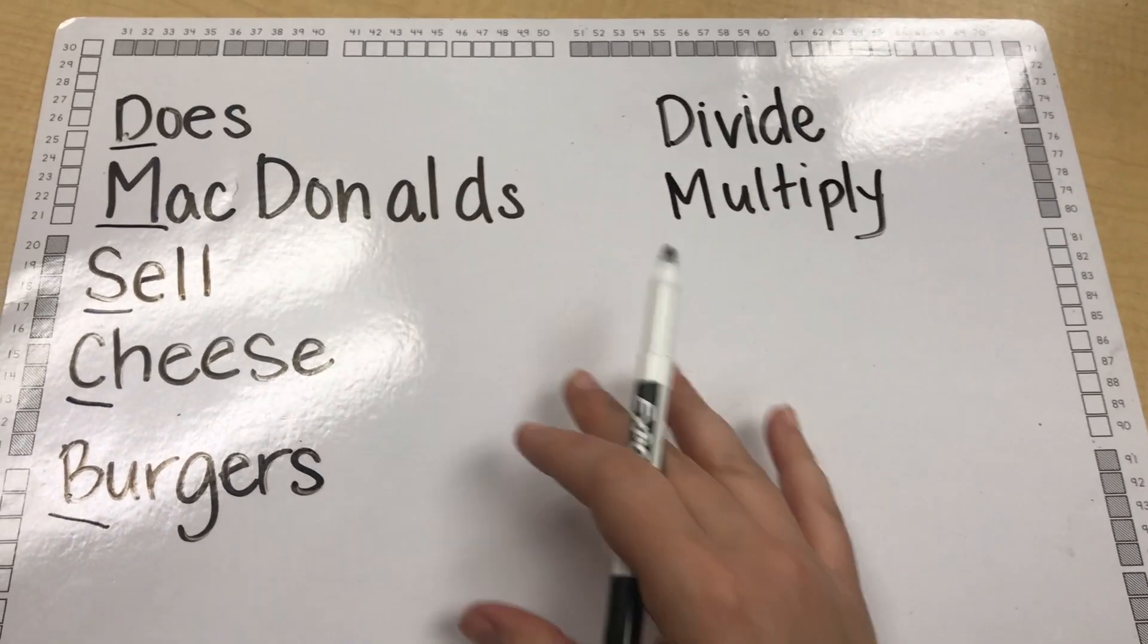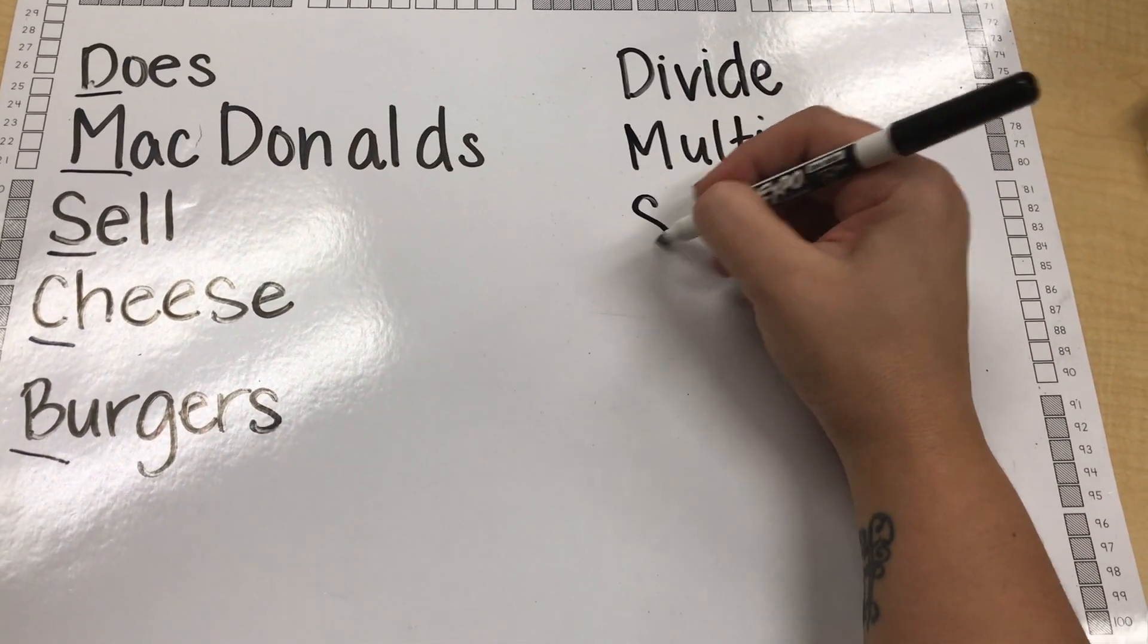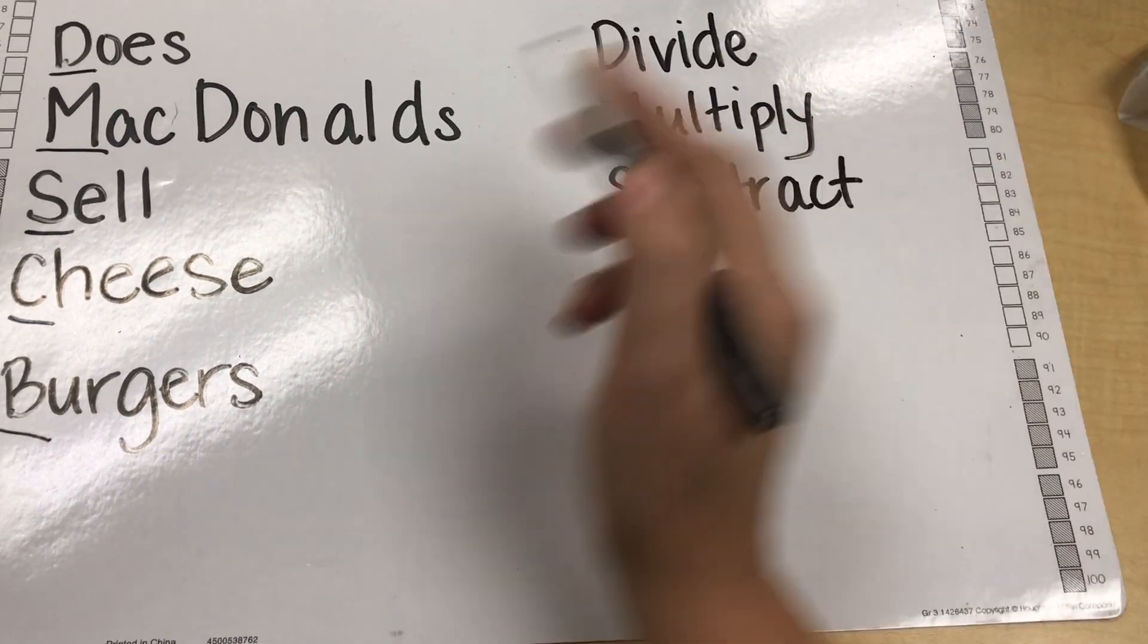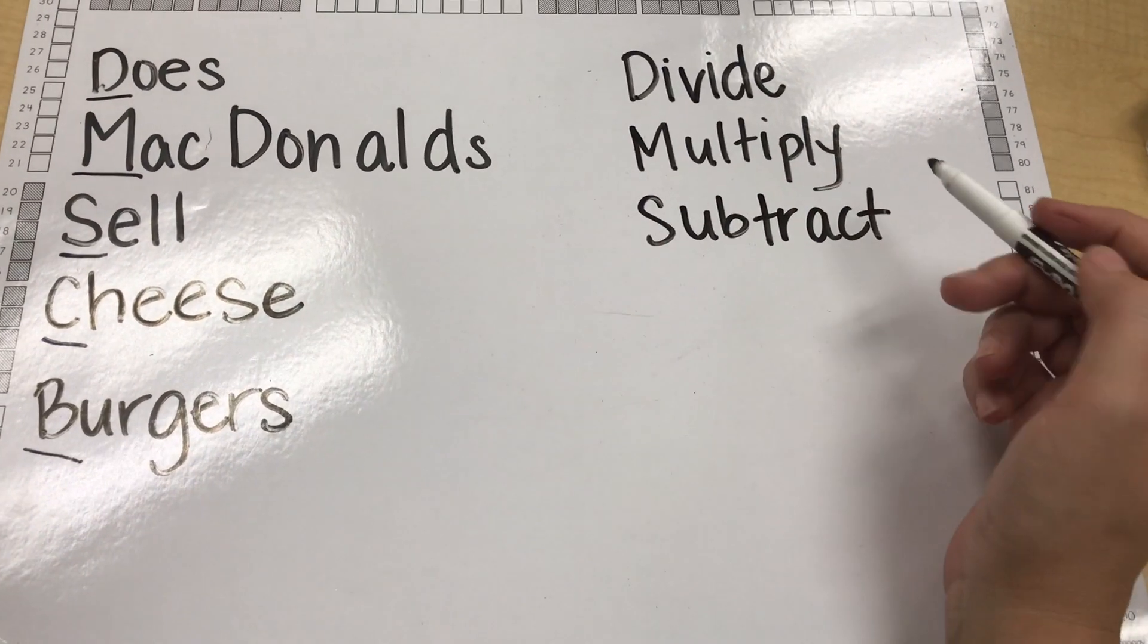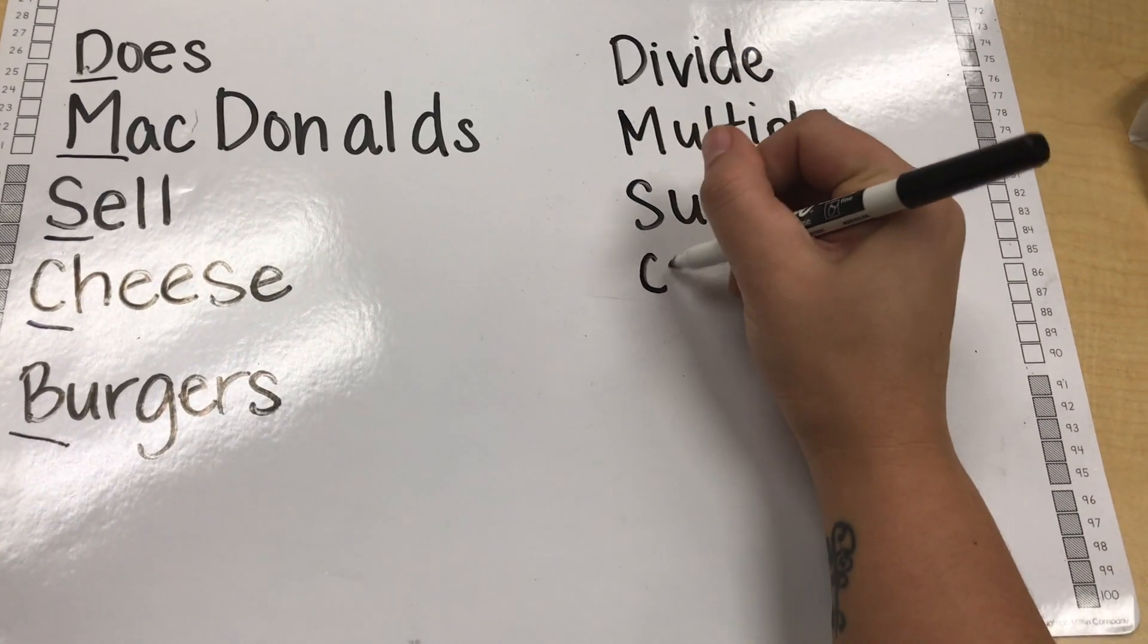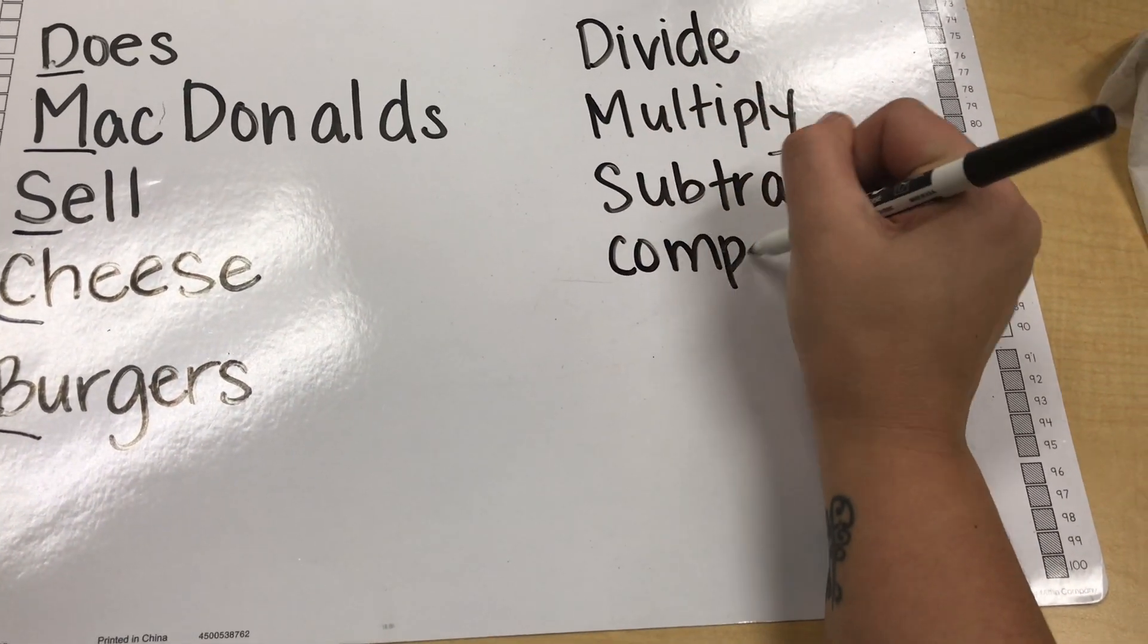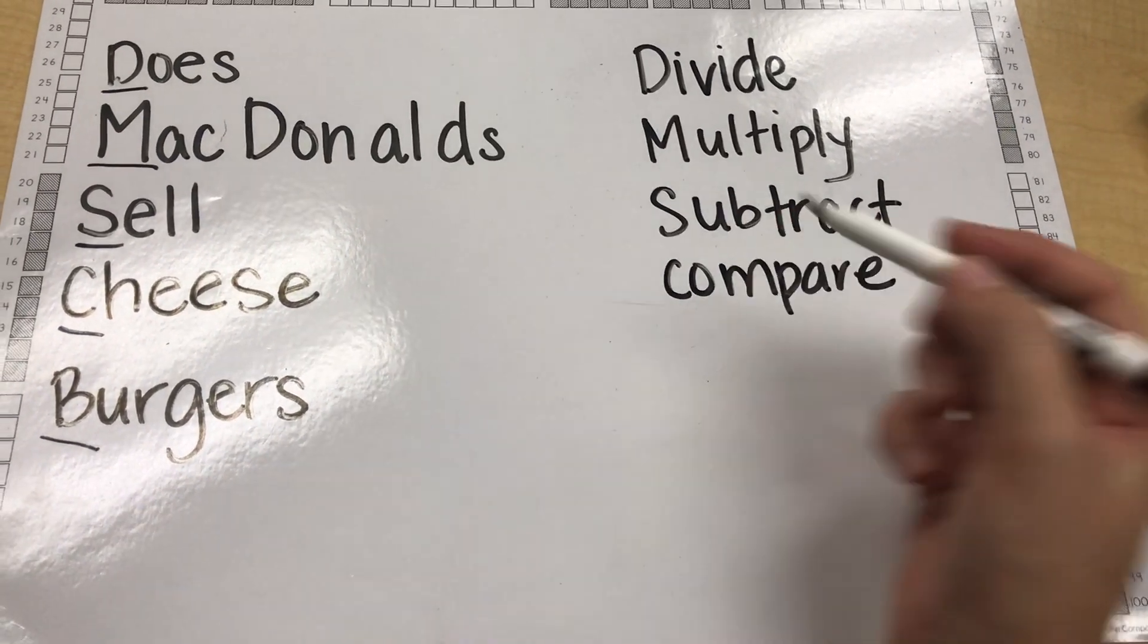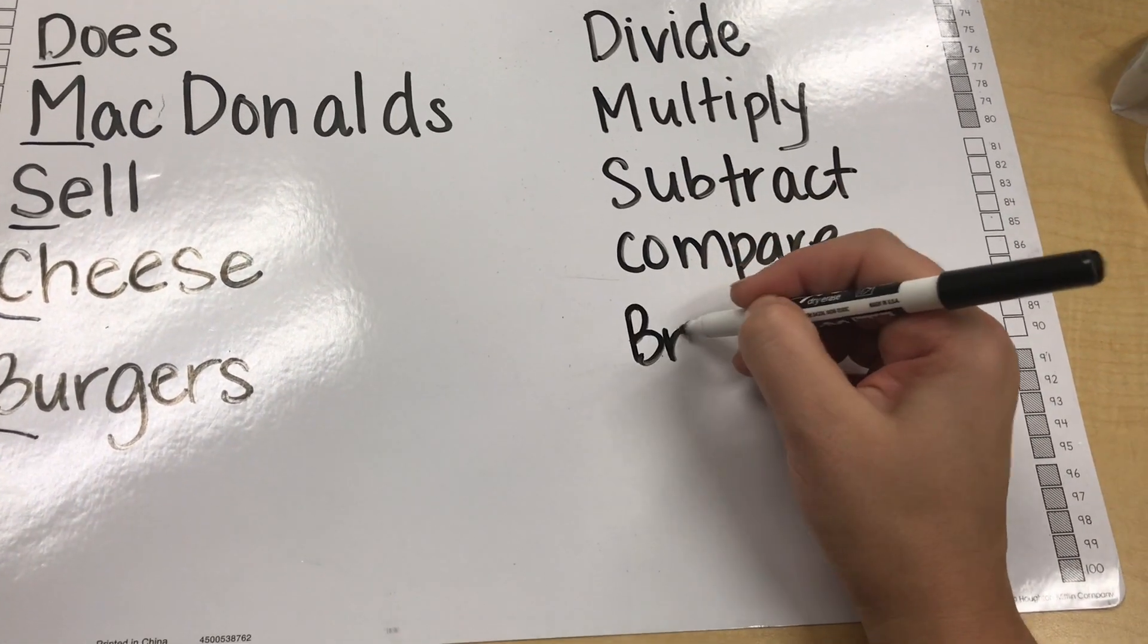The S in sell stands for subtract and the C in cheese stands for compare. And our last phrase burgers, the B stands for bring down.